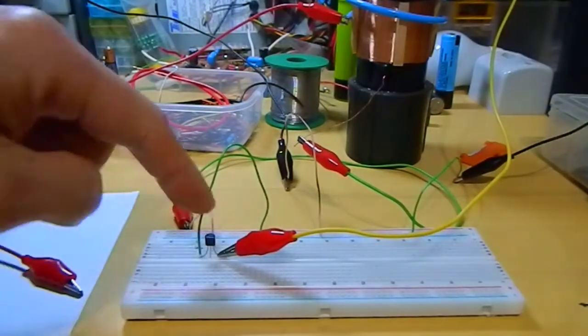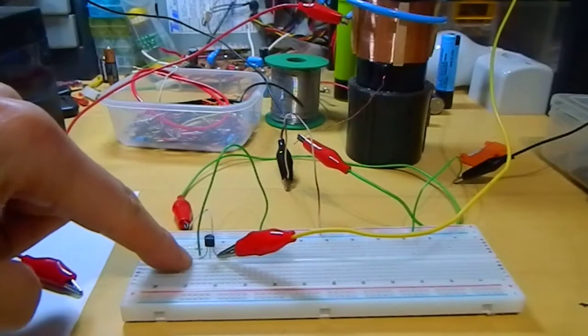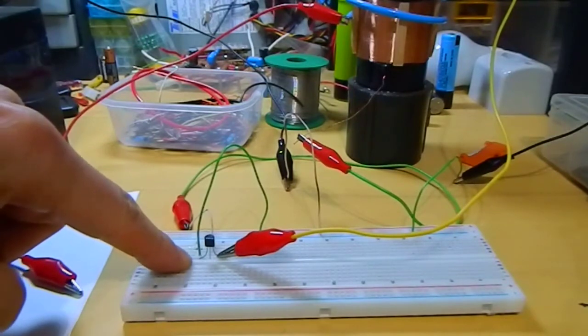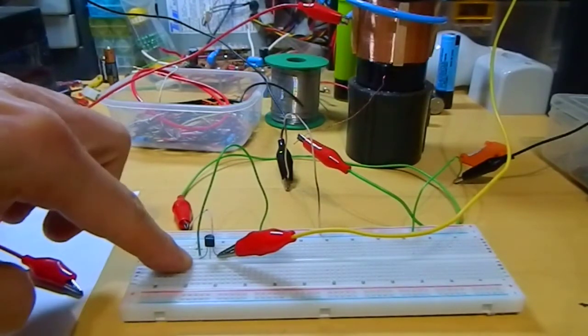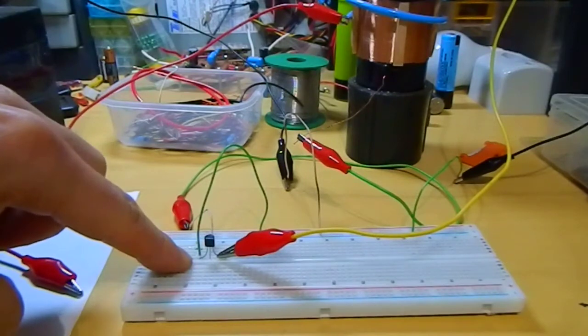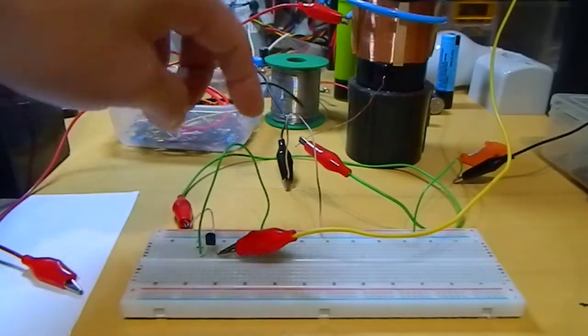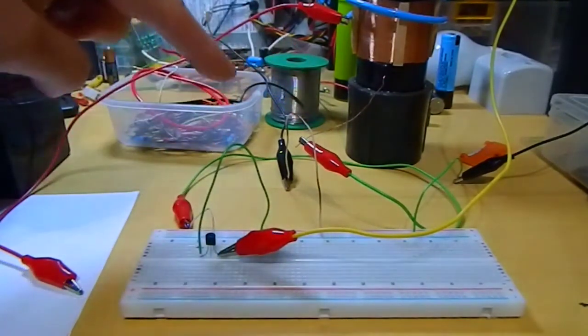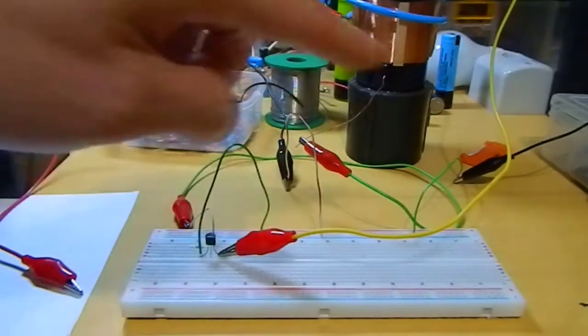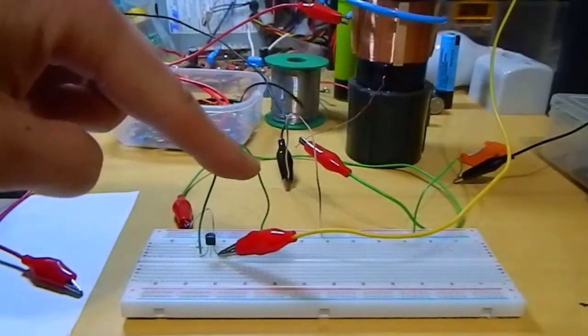As you can see, there is just the transistor - emitter on negative rail, base connected to the bottom of the coil, collector coming from one side of the coil.